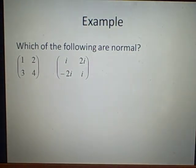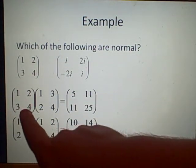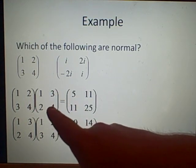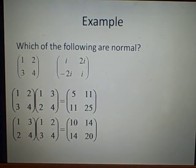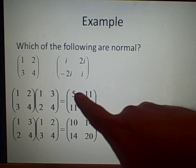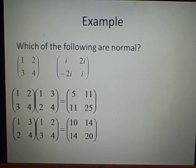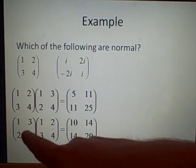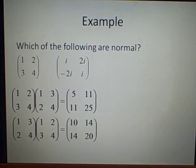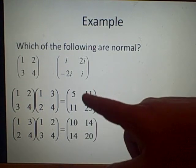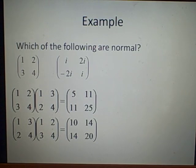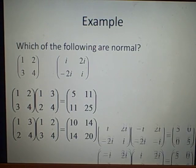So we'll do this one first. We have 1, 2, 3, 4, multiplied by 1, 3, 2, 4, which is the conjugate transpose. And this gives us 5, 11, 11, 25. And if you do it the other way around, so we multiply this one first, and then this one, then we'll get 10, 14, 14, 20, which is not. And because these aren't equating, that means it is not normal.